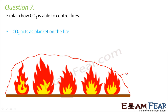This blanket of carbon dioxide cuts off contact between the burning substance and oxygen. Basically, the contact of the substance with oxygen is lost due to the formation of a blanket of carbon dioxide in between them. Since the supply of oxygen is cut off, combustion does not take place, because oxygen is an important requirement for combustion.